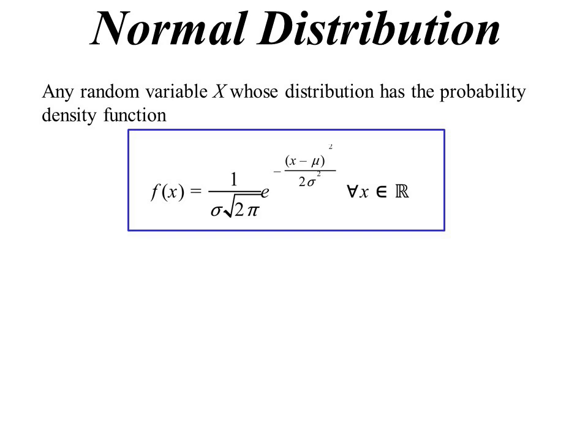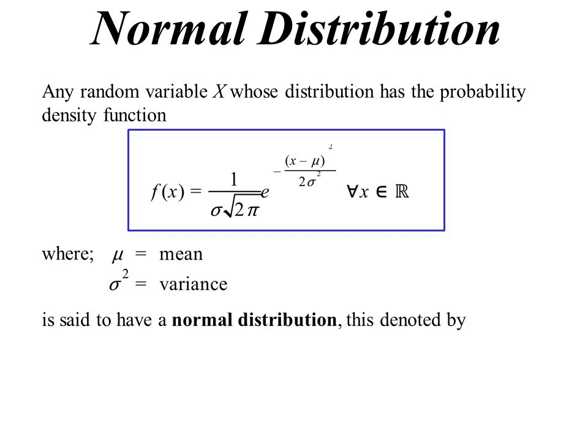This is the probability density function of a normal distribution. So 1 over σ√(2π) e^(-(x-μ)²/(2σ²)). And μ and σ² are mean and variances we used to see. That is with the normal distribution.